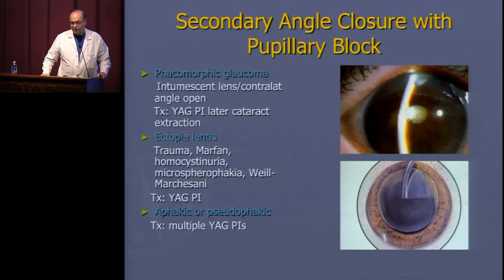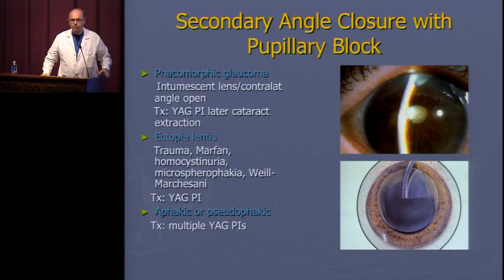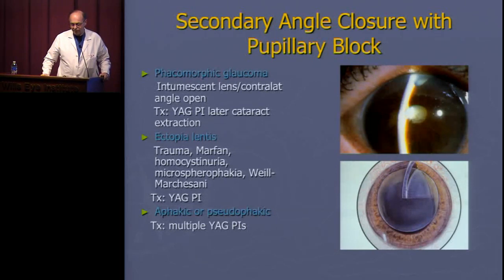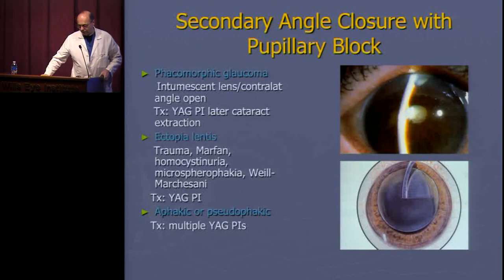For phacomorphic cases, you could take the lens out, but many times there's an acute situation with pressure elevation bringing them to the ER. So you often do a laser iridotomy first, let the eye quiet down, let the pressure normalize, and then take the cataract out at a later time. Or if you're brave, you can take the cataract out immediately, which would also relieve the pupillary block right away.